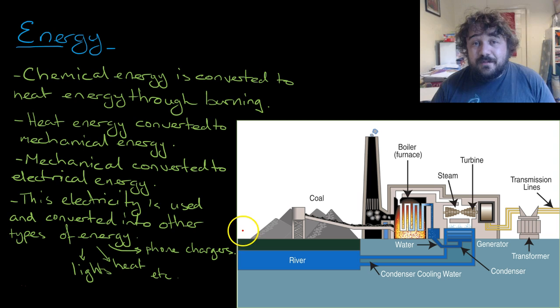So we're converting it into light energy there. If there was a heater on, like a space heater, we would be converting electrical energy into heat. We'll convert electrical energy into heat if you've got an electrical hot water system. Phone chargers, you're actually converting it back into chemical energy. And so forth and so forth.